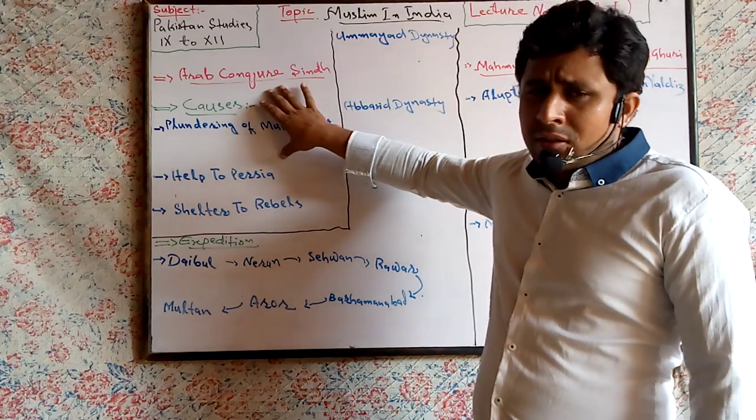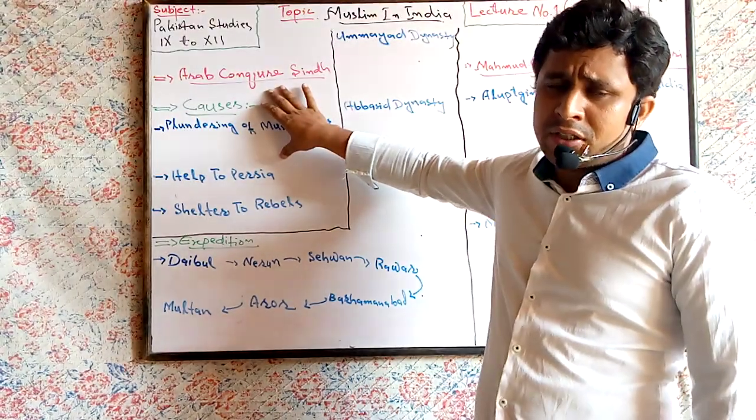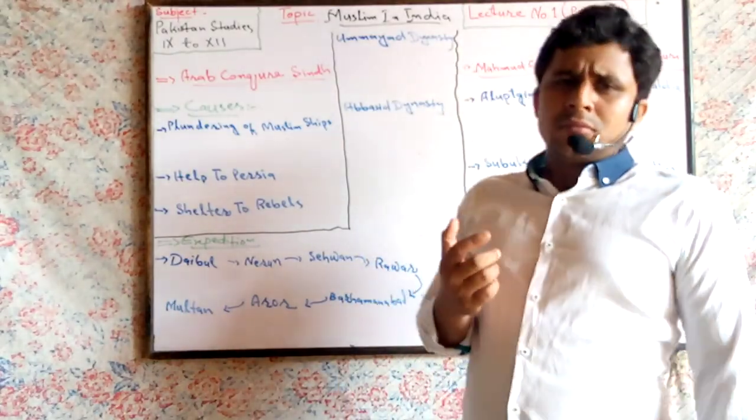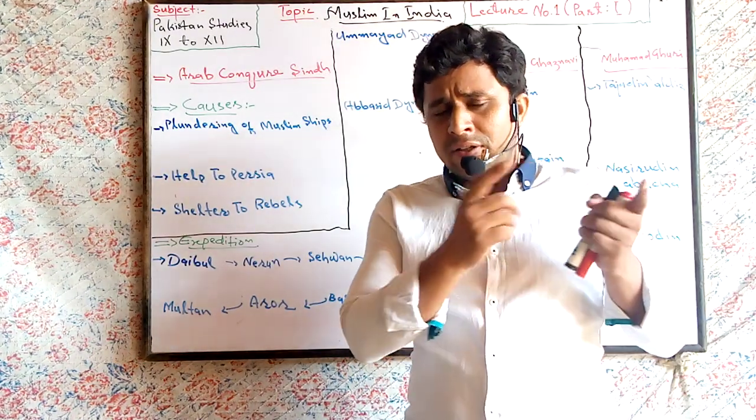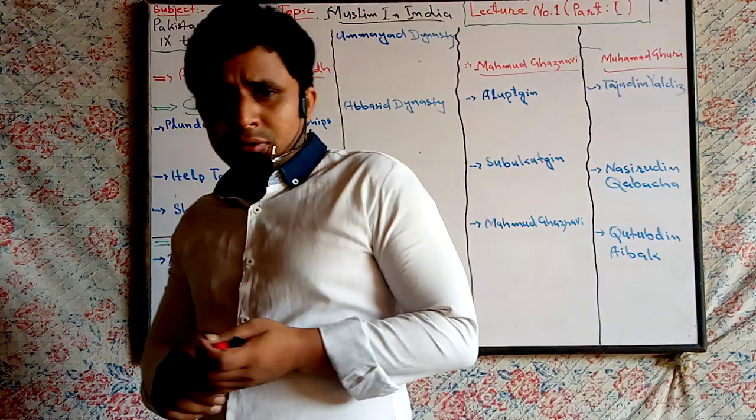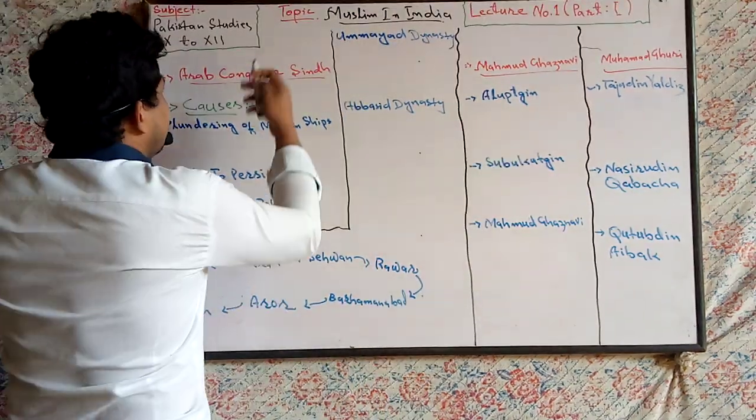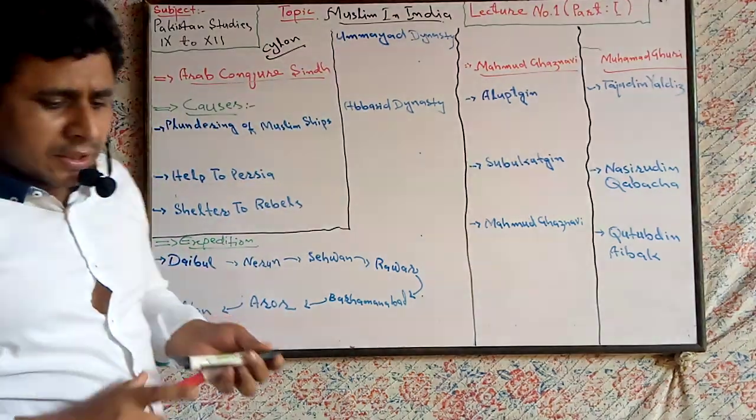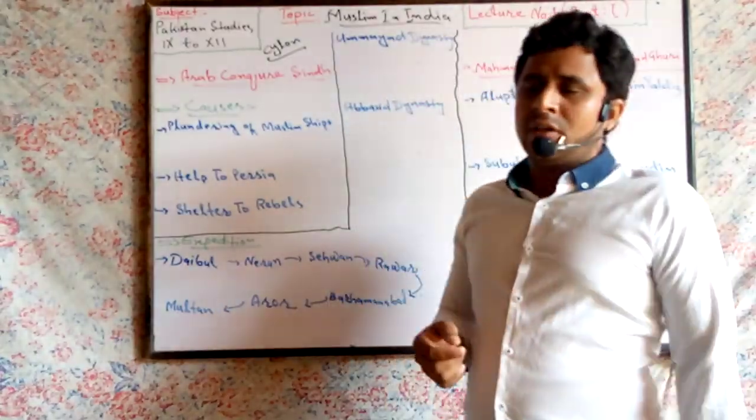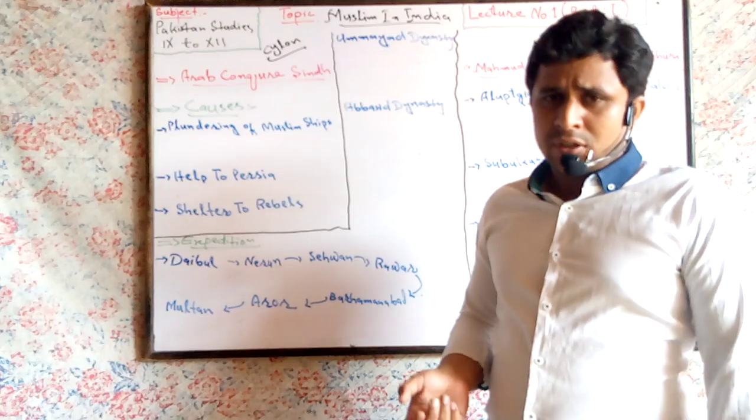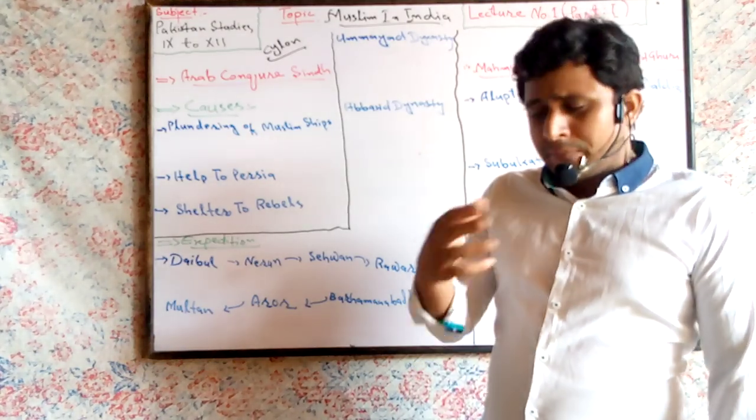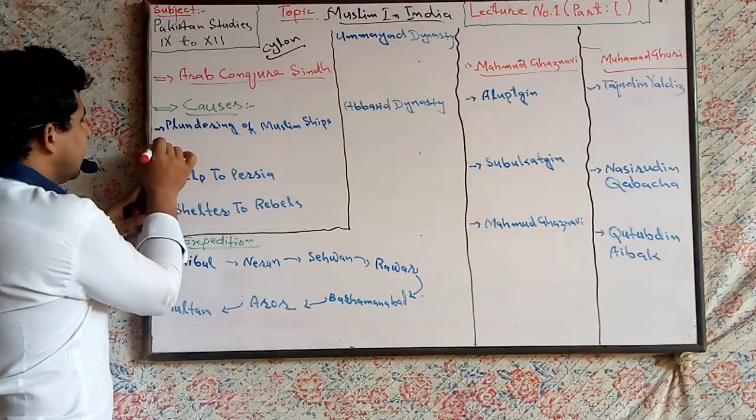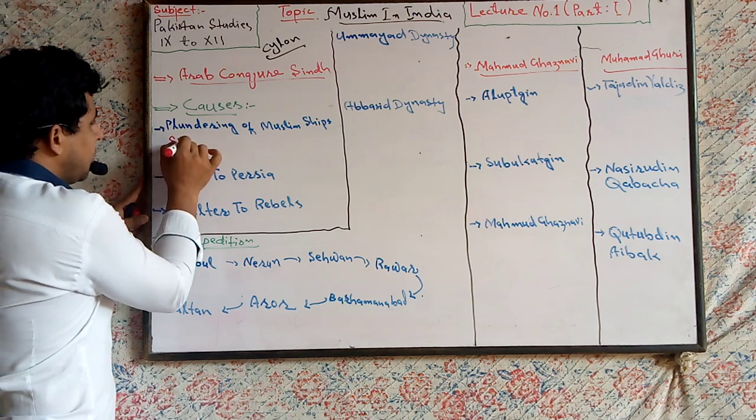And why did Arabs conquer Sindh? What were the reasons behind it? First reason: plundering of Muslim ships. Dear friends, some Arab merchants lived in Ceylon, now Sri Lanka, and died there. The king of Ceylon sent their orphans and widows to Arabs with some valuable presents, but they were plundered by Sindhi pirates.